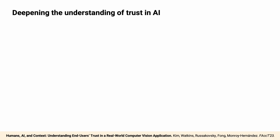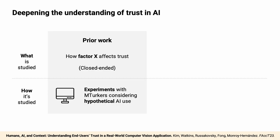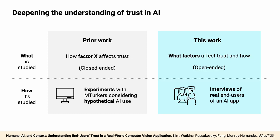Trust is a key factor in people's interactions with AI systems. To better understand trust and foster it appropriately in human-AI interactions, there has been significant empirical work investigating how certain factors affect trust. Most of these works conduct carefully controlled lab experiments to draw causal conclusions. In this work, we take a different approach to provide complementary insights, qualitatively exploring what factors affect trust and how in a real-world context, by interviewing real end-users of an AI application.